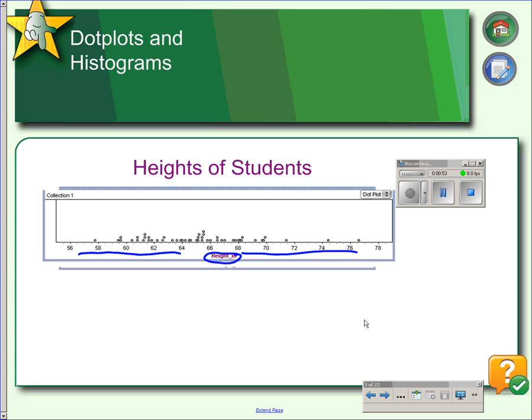Dot plots are good for displaying small amounts of data. However, when you have a larger amount of data, a histogram would be a better choice.